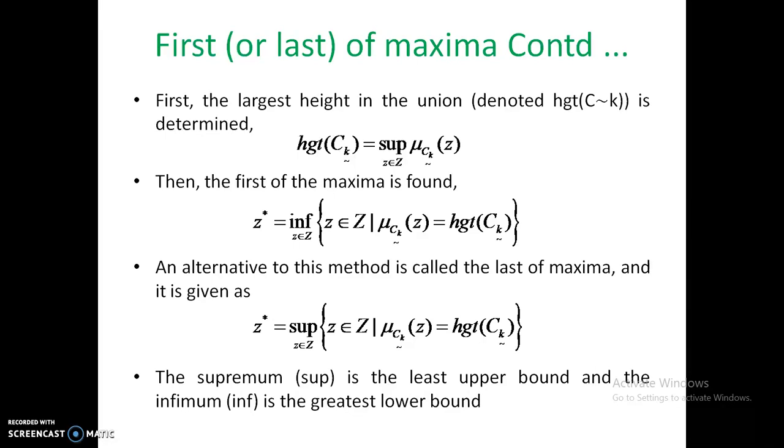The first of the maxima is found. Suppose I got the maximum value from 3 to 5 for my fuzzy set. Then 3 is called the first of the maxima and 5 is called the last of the maxima. It is written accordingly.